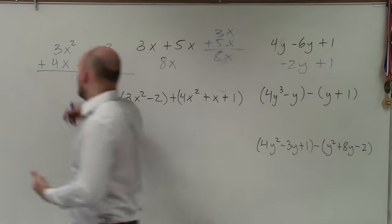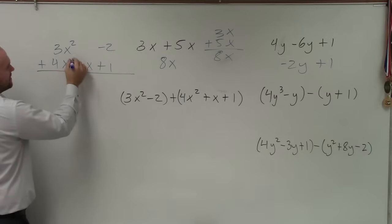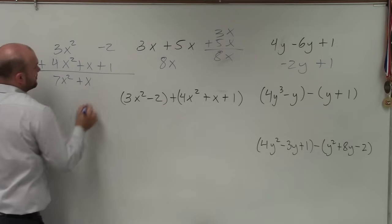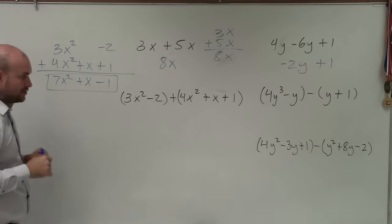So when adding my vertical method, all I basically do is add my like terms. So 3x squared, oops, that's 4x squared, right? 3x squared plus 4x squared is 7x squared. x, I have nothing to combine it to, so it's just x. And negative 2 plus 1 is negative 1. And there you go, I'll combine my terms.